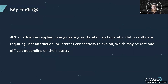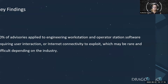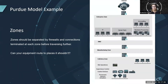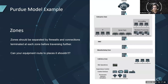40% of advisories applied to engineering workstations and operator station software requiring user interaction or internet connectivity to exploit, which may be rare depending on the industry. Zones should be separated by firewalls and connections terminated at each zone before traversing into the next one — meaning when your connection traverses through one zone, it should be terminated and reestablished, never crossing more than one at a time. Your engineering workstation or operator workstation software should not have connectivity to the internet, or at least not directly. It should be filtered through a firewall or proxy, keeping in mind that malware could be proxy aware. Update servers can live inside the DMZ, pulling down a trusted copy instead of having your systems reach directly out to the internet.